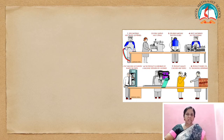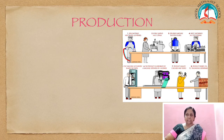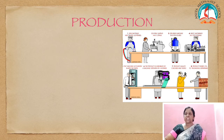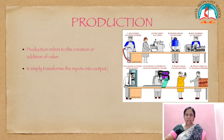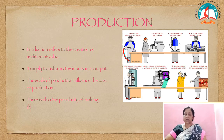In the introduction we are going to learn the meaning of production. Production is the process of making material and immaterial inputs and converting them into output for consumption. Production is the result of the four factors of production: land, labor, capital, and organization. Production refers to the creation or addition of value — in other words, it simply transforms input into output. Production may be at various levels, and the scale of production influences the cost of production, with the possibility of making products at a lower price.